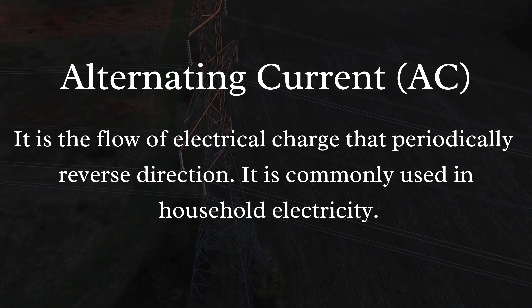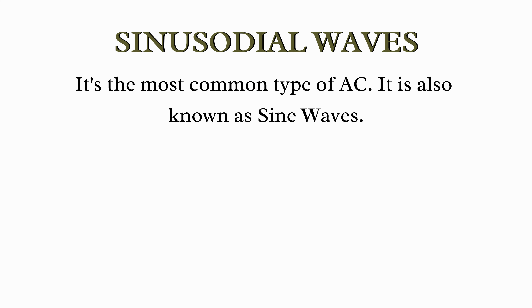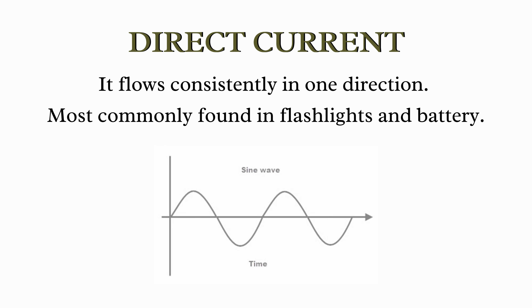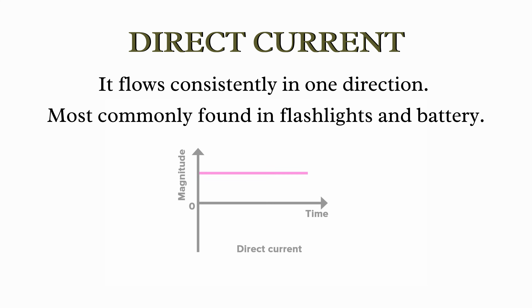Alternating current is commonly used in household electricity. The most common type of AC is a sine wave, also known as a sinusoidal wave — it is the only waveform where 100% of the energy is concentrated at a single frequency. Direct current, or DC, is an electrical current that flows consistently in one direction. It is the current that flows in a flashlight or appliances running on batteries.